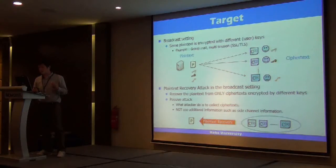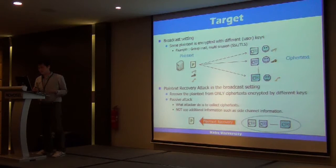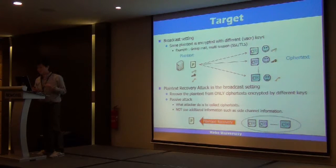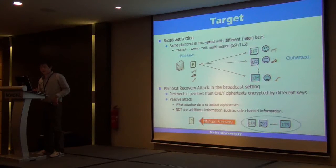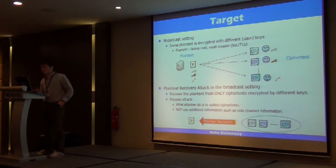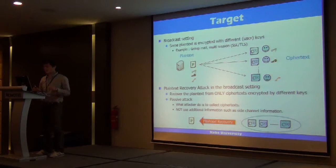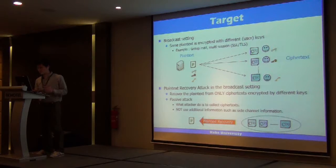First, I'll explain the target setting and the adversary. The target setting is the broadcast setting. In this setting, the same plaintext is encrypted with different keys — there is only one plaintext, encrypted as ciphertext with different keys. The purpose of this attack is to recover the plaintext from only the ciphertext, which is encrypted with different keys. This is a passive attack: the attacker only collects ciphertexts and does not use additional information such as side channels or partial knowledge of the plaintext.